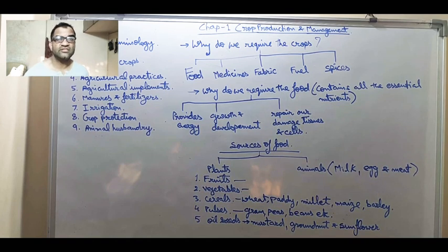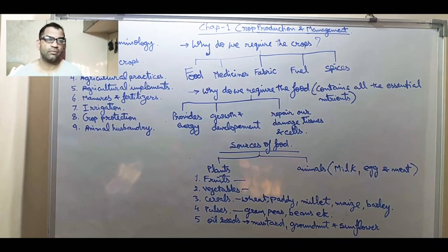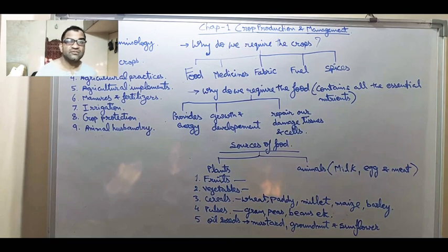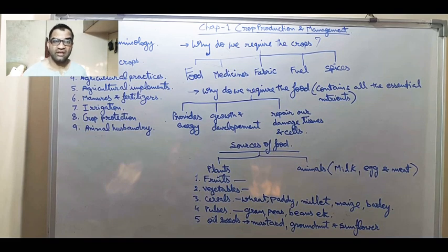Now in the case of cereals - cereals means wheat, paddy, millet means bajra, jawar, maize means corn, barley. In the case of pulses, pulses means dal, gram means chana, peas, beans, etc. We eat all these pulses in our daily life.